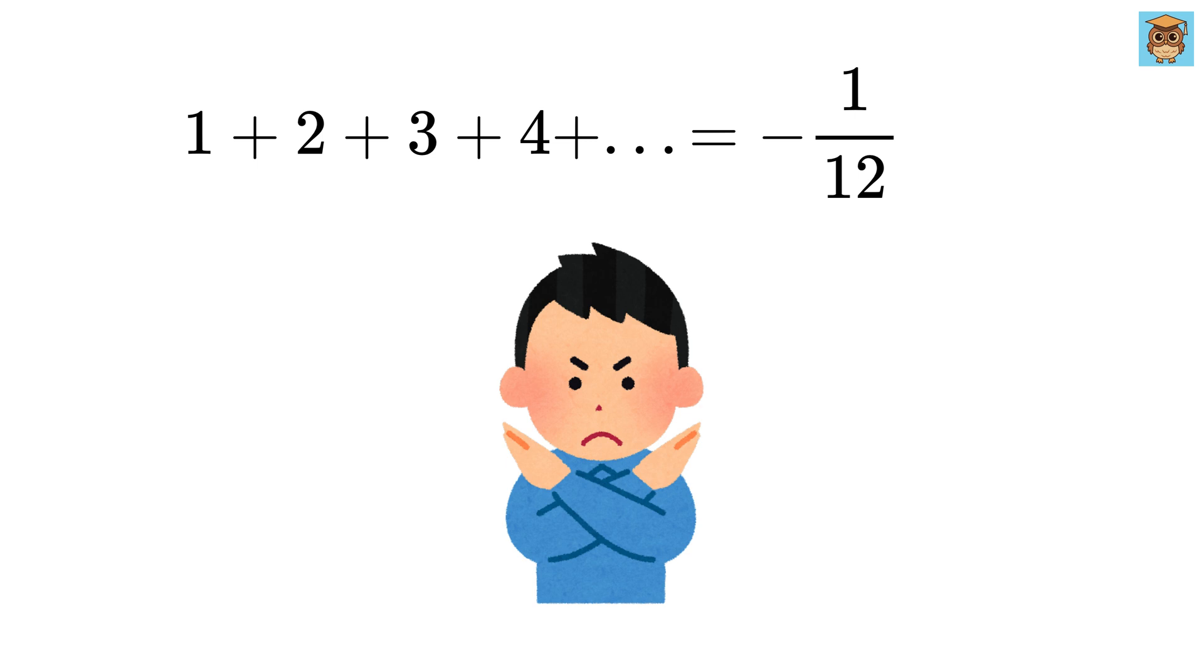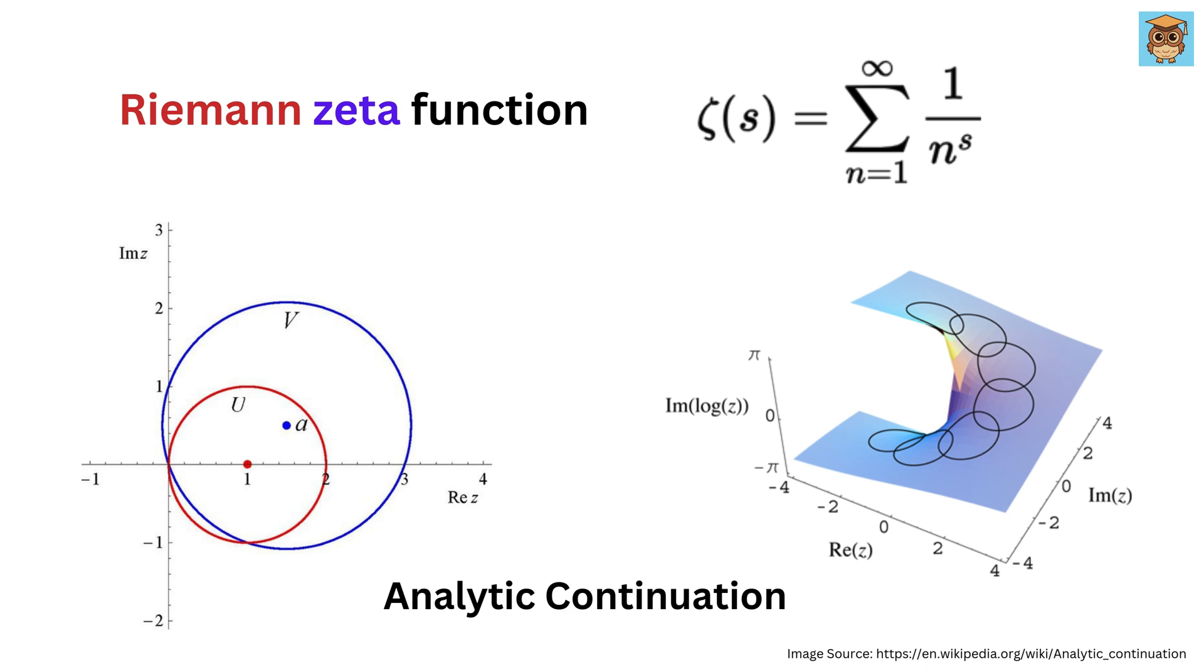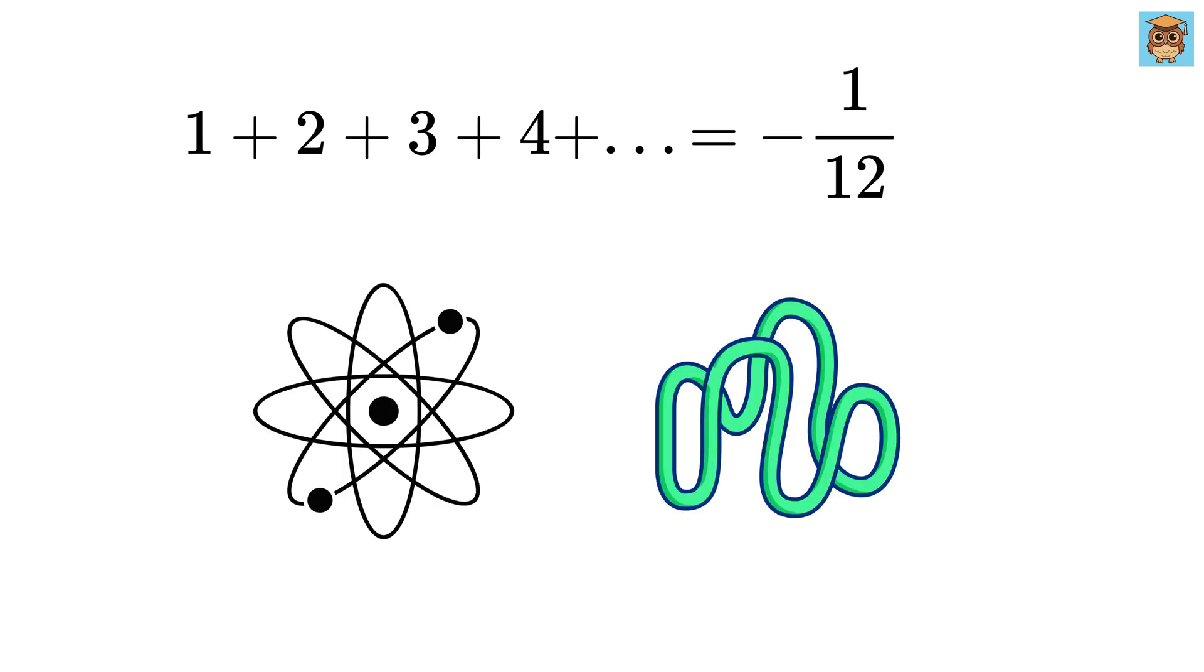However, in a special mathematical sense, using a method called analytic continuation and the Riemann zeta function, the sum can be assigned the value minus 1 over 12 in a specific context. This value is useful in areas like string theory and quantum physics, but it does not mean that adding the numbers normally gives this result.